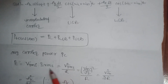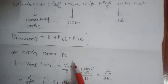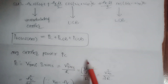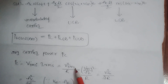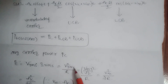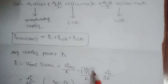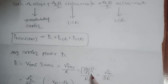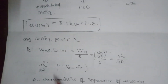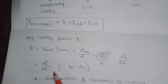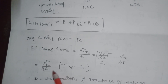We take our terms in RMS because both the message signal and carrier signal are sinusoidal signals. So PC = VRMS²/R. Since VRMS = VM/√2, we substitute: (VM/√2)² / R = VM²/(2R). Therefore PC = AC²/(2R).